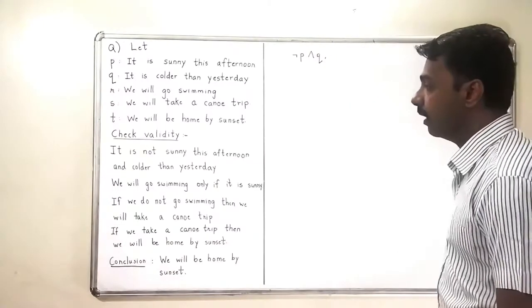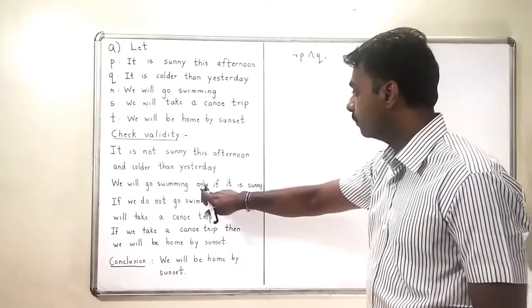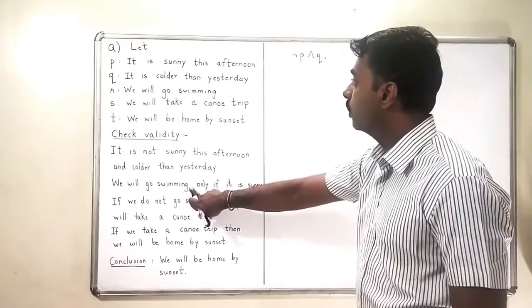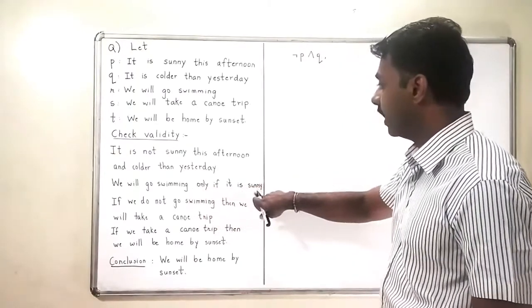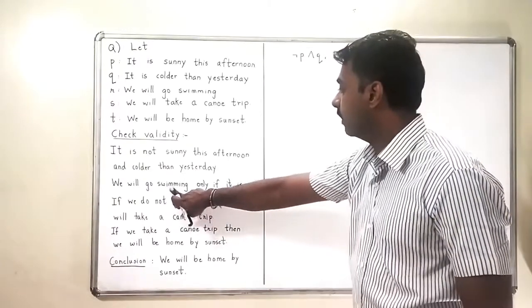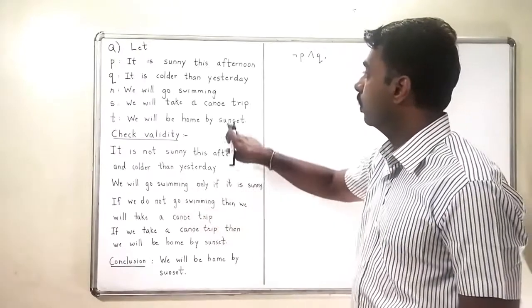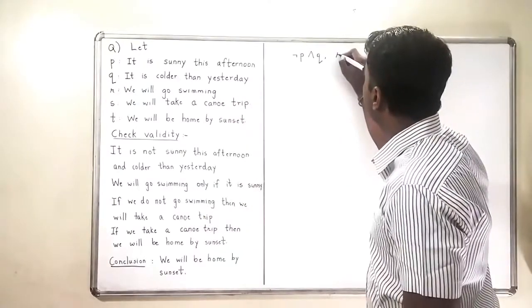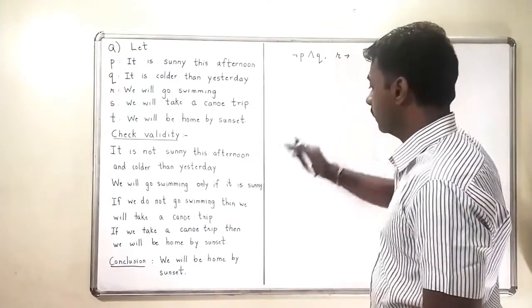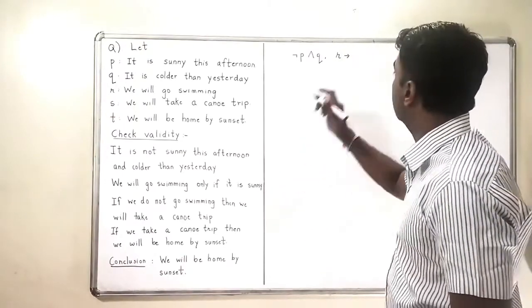The second thing is we will go swimming only if it is sunny, which means swimming implies sunny. So swimming is R implies sunny is denoted by P.